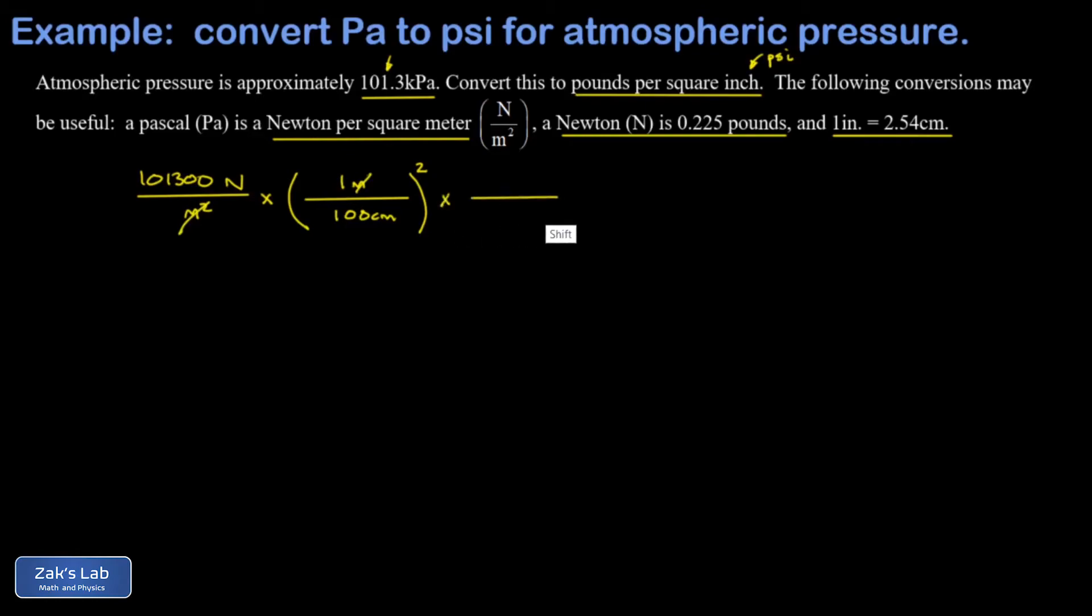Then I need to convert those square centimeters to square inches. Now use this conversion factor: 2.54 centimeters for every inch. And again, I have two copies of centimeters.